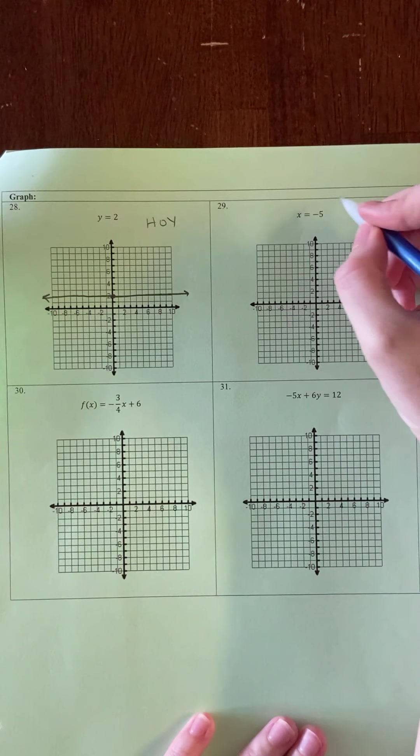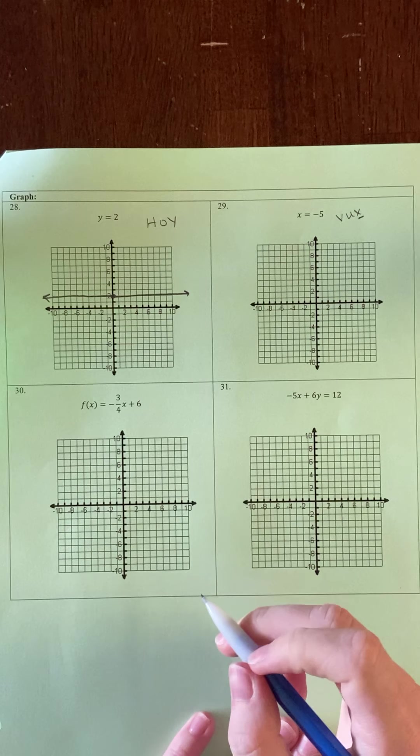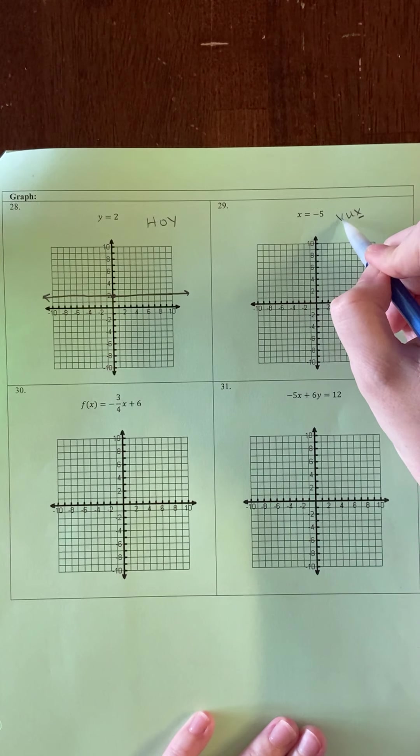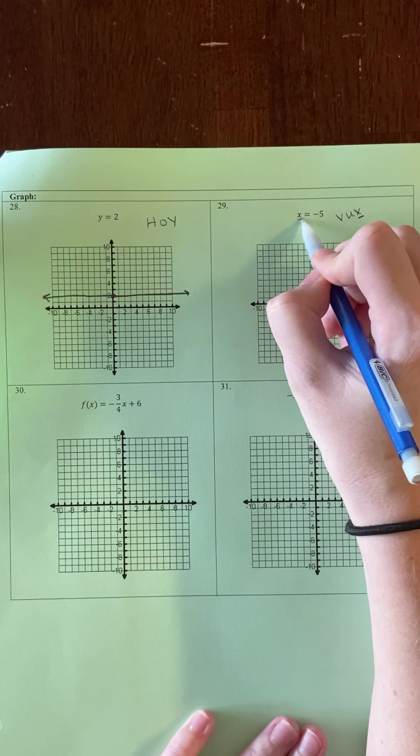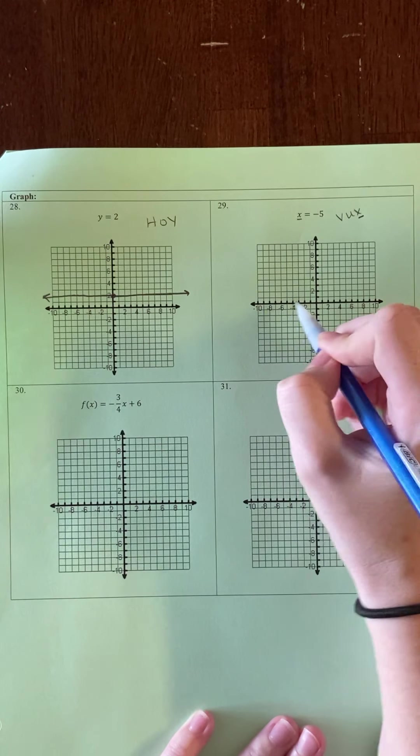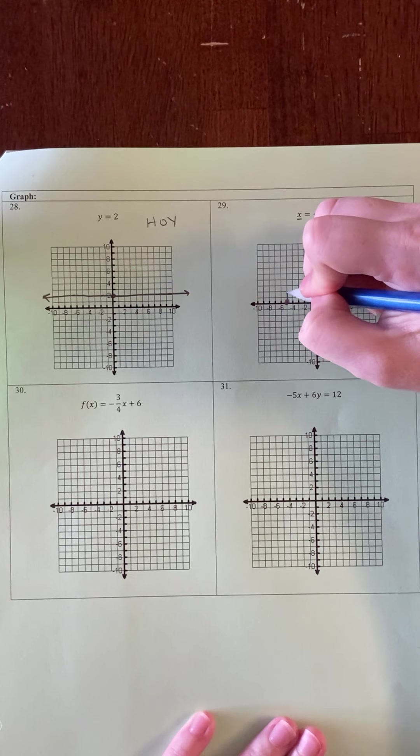The next one is our other special case. This is x equals a number, and that is BUCKS. X equals a number has an undefined slope and is a vertical line. This is at negative 5, so I'm going on the x-axis to negative 5 and drawing a vertical line through that point.